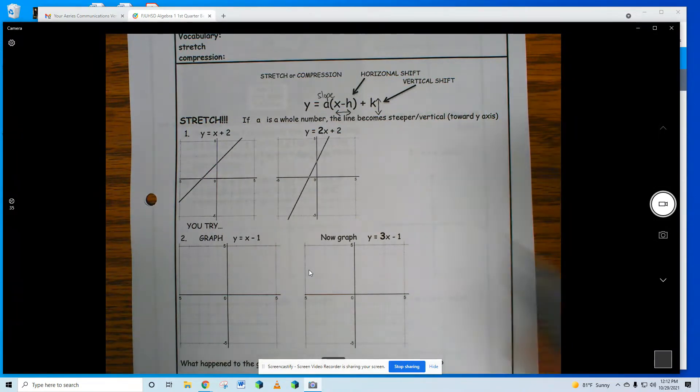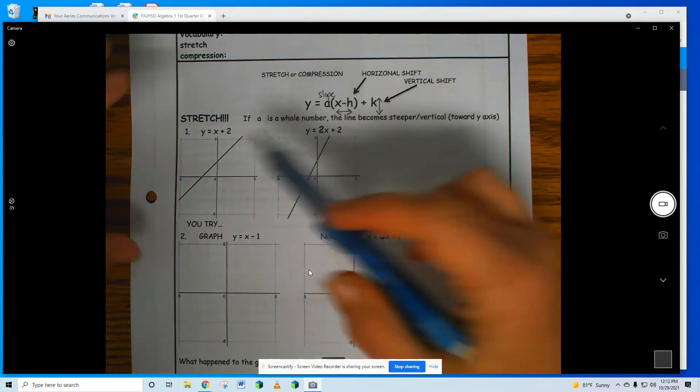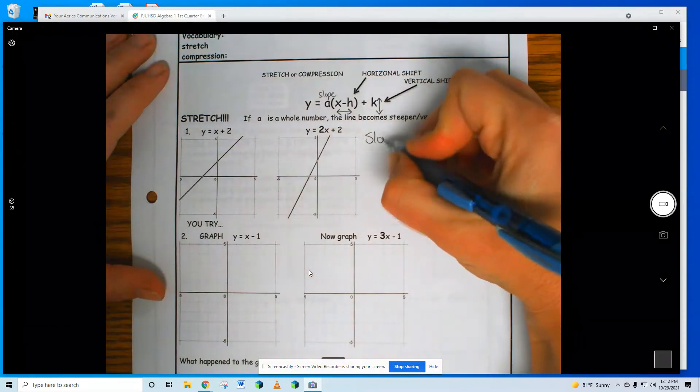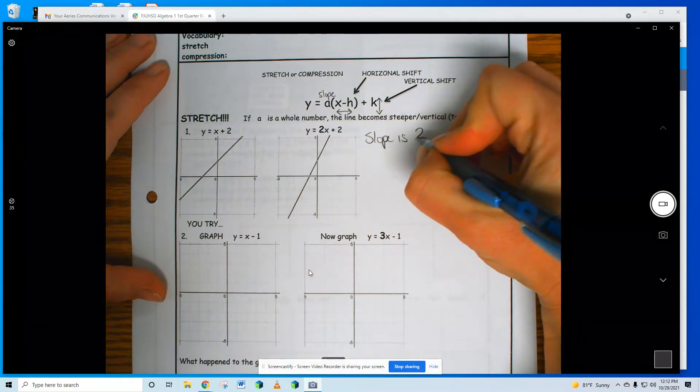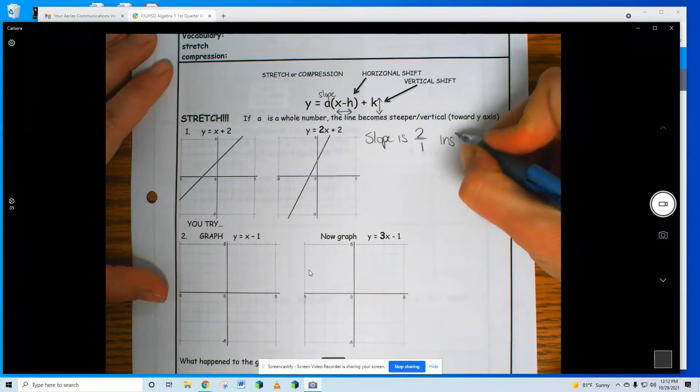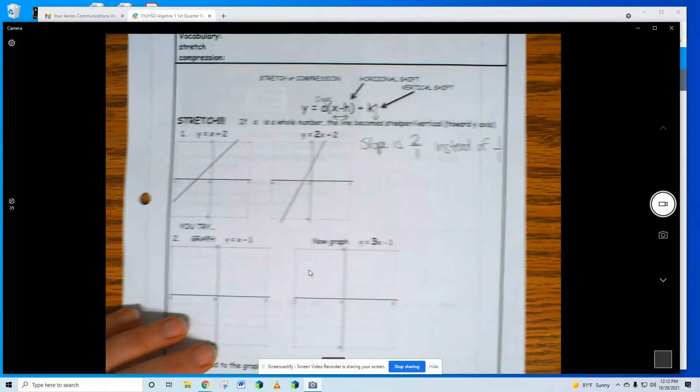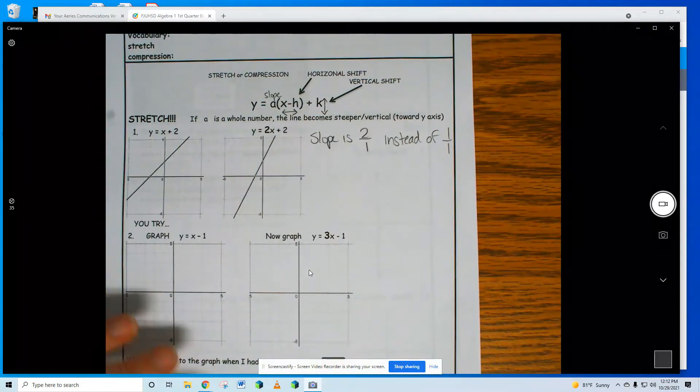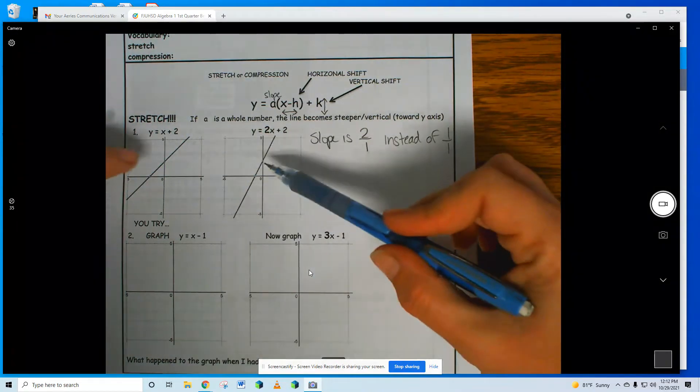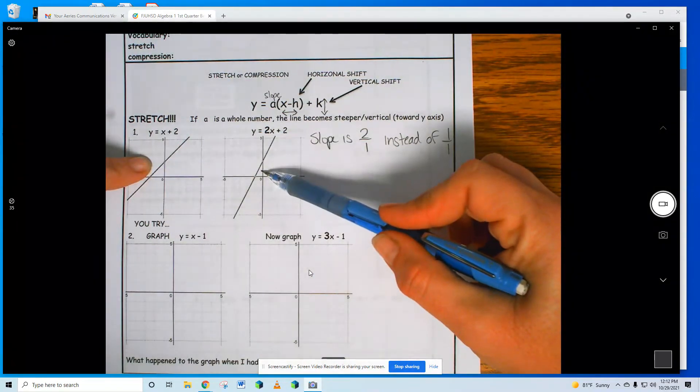Did you graph all four of these already? Two of them were done. Check this out: if I put a 2 in front of my x, my slope is now 2 over 1 instead of 1 over 1. So my slope used to be 1 over 1, and now I put a 2. What happened to this line right here? How did this line change from this line?